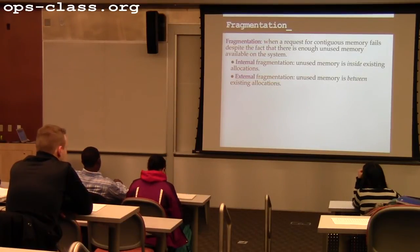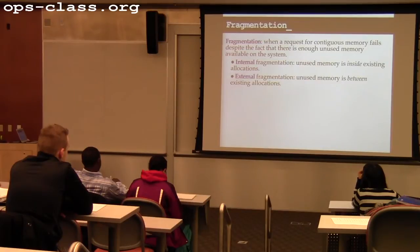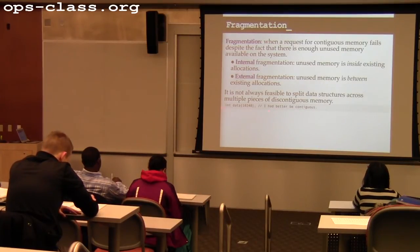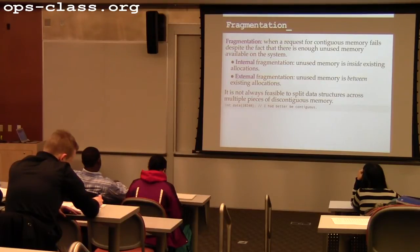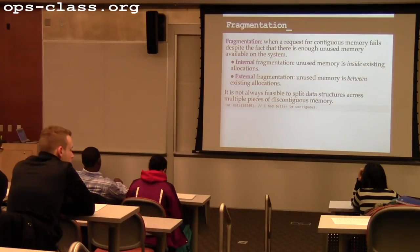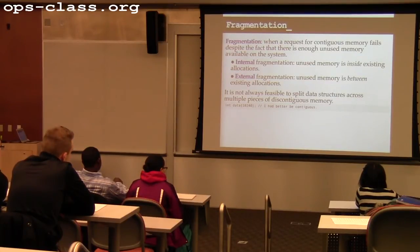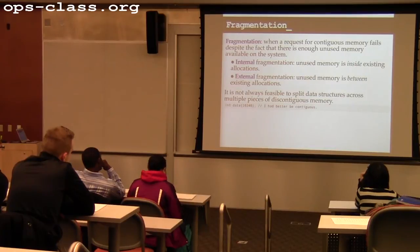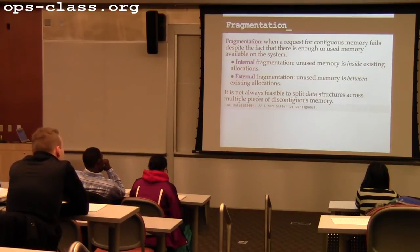Internal fragmentation means unused memory is inside allocations. External fragmentation means unused memory is between allocations. In either case I have enough available memory to satisfy the allocation, but cannot satisfy it because that memory is not contiguous. In C, the compiler does simple pointer arithmetic internally — when you access data[512], it takes the beginning address of data and adds 512 ints to figure out where the memory is. If that array is split into several pieces, the pointer arithmetic breaks completely.